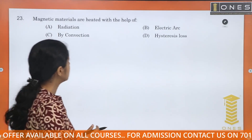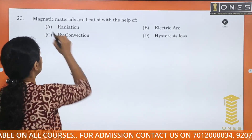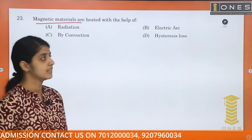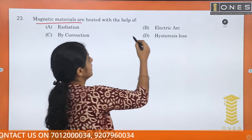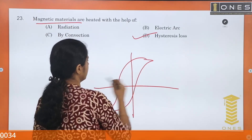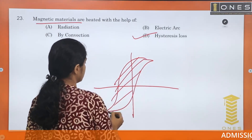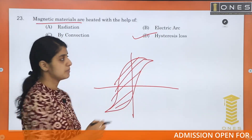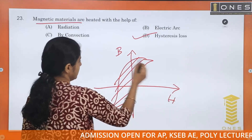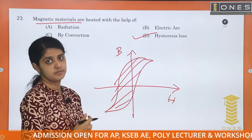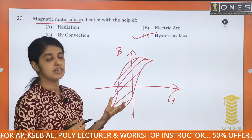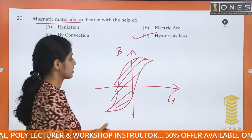Magnetic materials are heated with the help of energy dissipation through the BH curve — that is, hysteresis losses. The area of the BH hysteresis loop represents the energy dissipated as heat per cycle in the magnetic material.